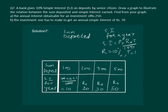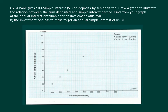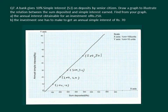Now let us plot the graph. For sum deposited Rs 100 we have interest Rs 10; for Rs 200, interest Rs 20; for Rs 300, interest Rs 30; and for Rs 500, interest Rs 50. On joining the points we get a linear graph.